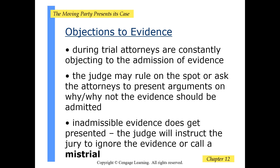During trial, attorneys are constantly objecting to the admission of evidence. The judge may rule on the spot or ask the attorneys to present arguments on why certain evidence should or should not be admitted. Inadmissible evidence does get presented; the judge will instruct the jury to ignore the evidence or call for a mistrial.